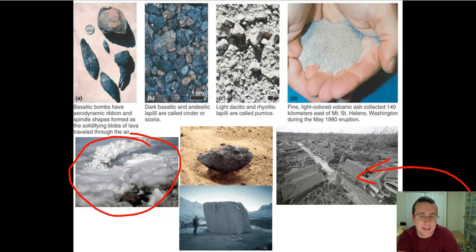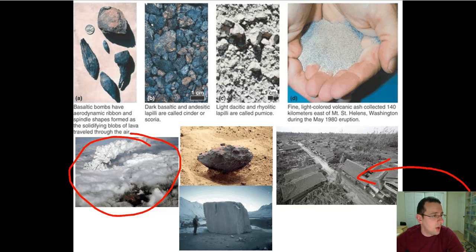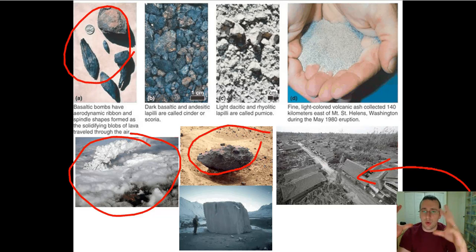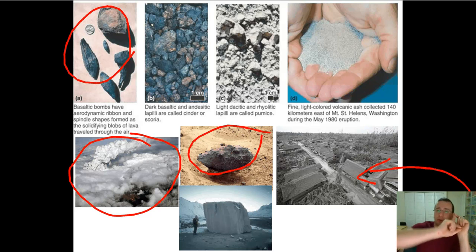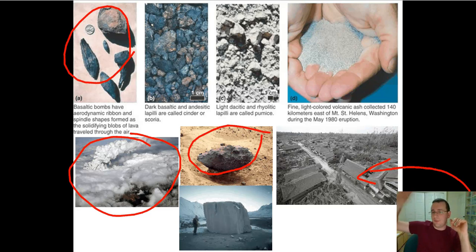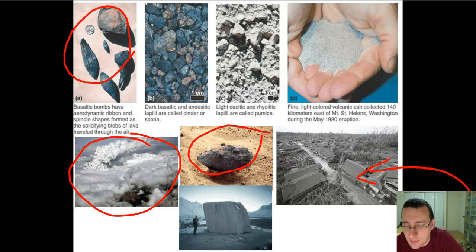If the lapili becomes larger than 64 millimeters, we no longer call it lapili — we call it basaltic bombs. These are large chunks of rock, sometimes the size of a basketball or even bigger, though normally they're potato-shaped lumps of rock projected from the volcano. These are basically chunks of lava that fly through the air and solidify on their way down as they strike things.